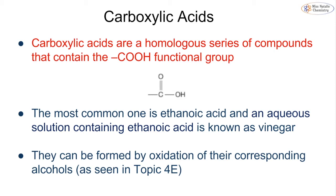A carboxylic acid is another member of a homologous series of compounds, and they all contain the COOH functional group, also called the carboxyl functional group. A homologous series means they all share a general formula, will all have similar chemical properties, and will have a trend in their physical properties — and they all share this functional group.